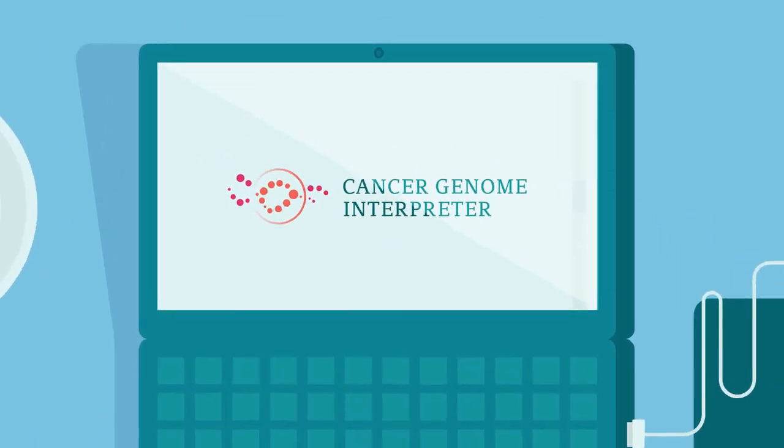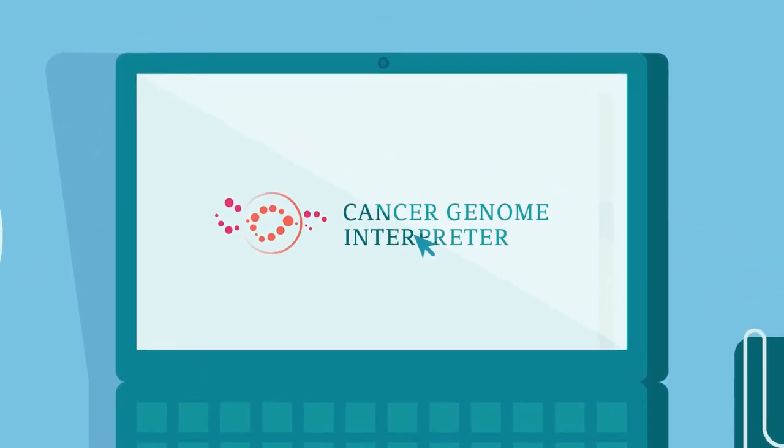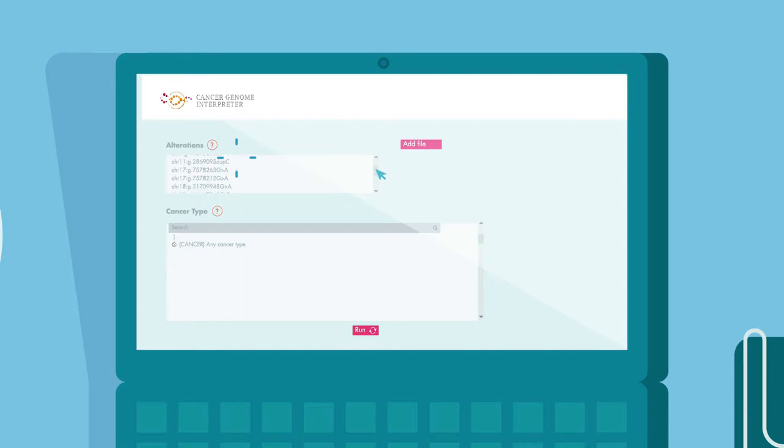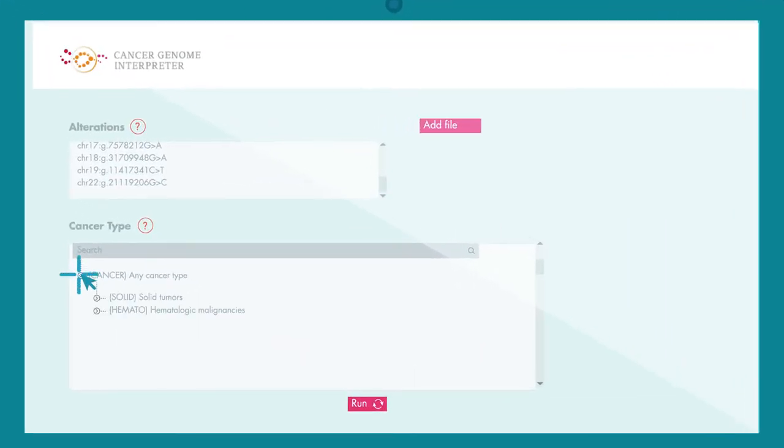The Cancer Genome Interpreter, or CGI, is an online portal where clinicians and oncology researchers provide the genomic alterations of a tumour sample and the type of cancer that they are analysing.